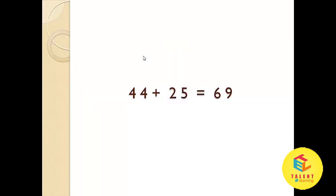In the same way, what is 44 plus 25? 4 plus 2 is equal to 6, and 4 plus 5 is equal to 9. So the answer is 69.